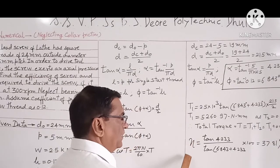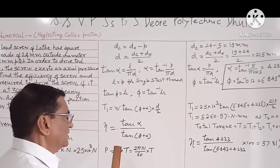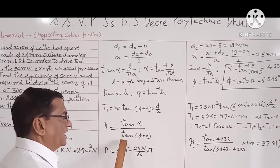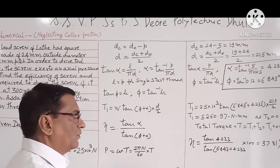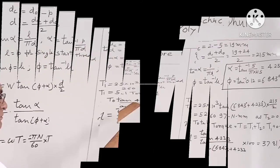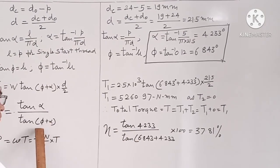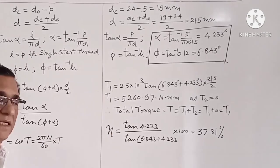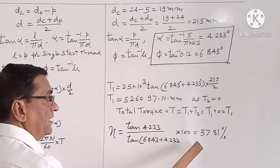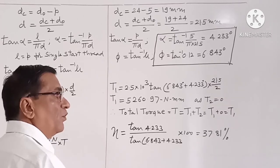So efficiency is given by this formula: tan alpha upon tan (phi plus alpha). From this we will be calculating the value of efficiency, that comes out to be 37.81%.